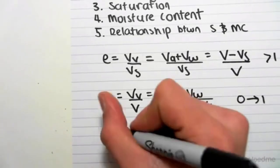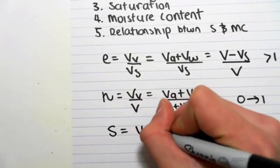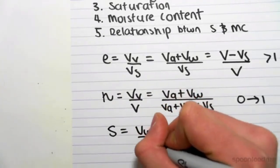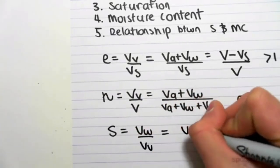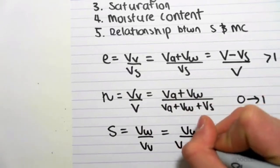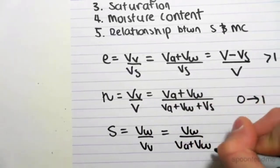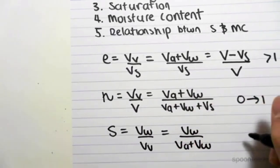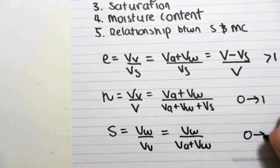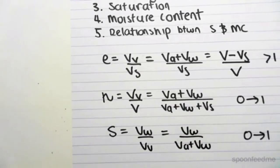The saturation is given by capital S, which equals the volume of the water on the volume of the voids, which we can further break down as volume of water on volume of air plus volume of water. This value, likewise, ranges from 0 to 1.